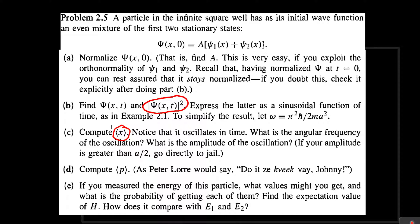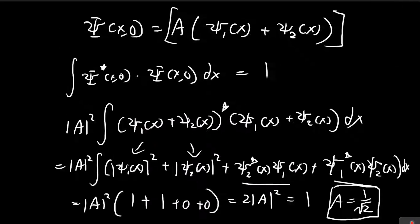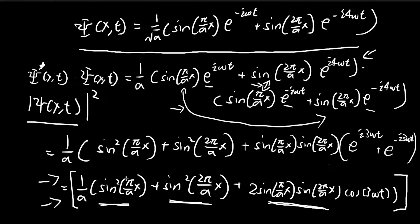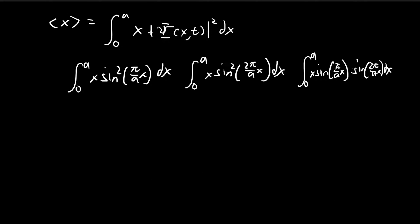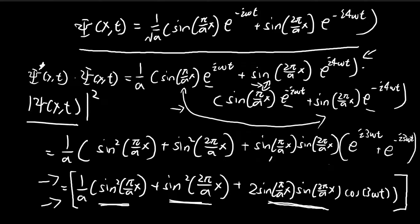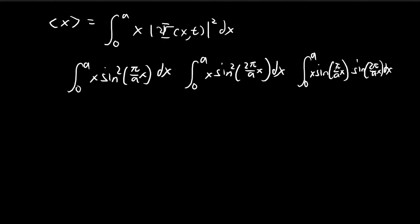In this problem, we need to find the expected value of x. Based on the result from last time, the answer is not going to look nice because we're going to have to use that result. The expected value of x — I've written out the formula — it's essentially x multiplied by the probability density function, which as we found last time does not look nice. So if we're going to solve this integral, we're going to have to solve three separate integrals, which are pretty tedious, and that's going to be the focus of this problem.